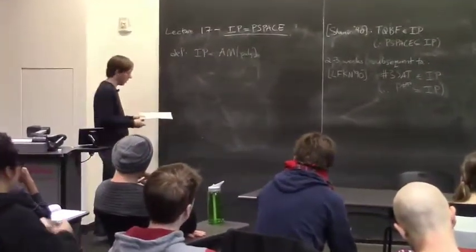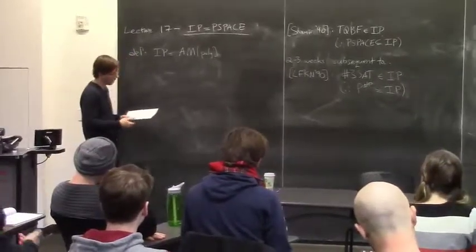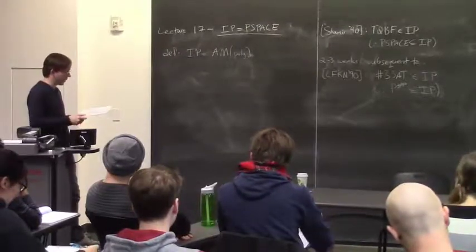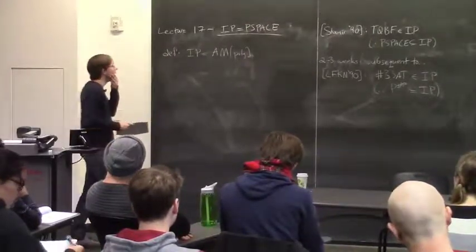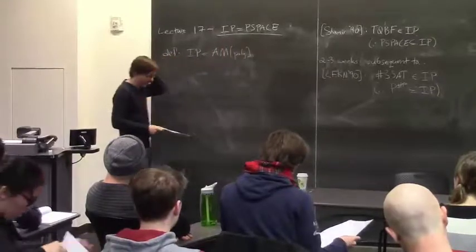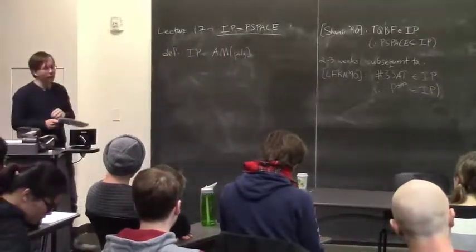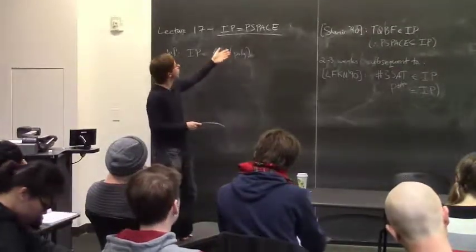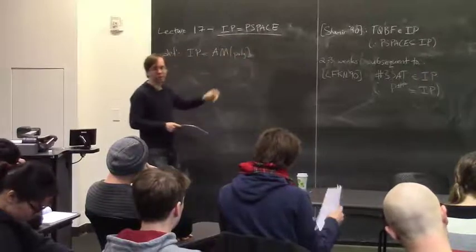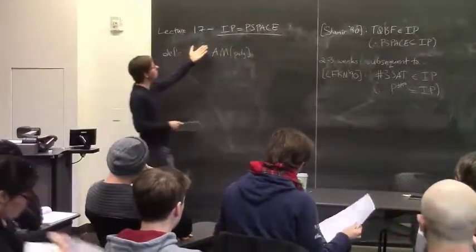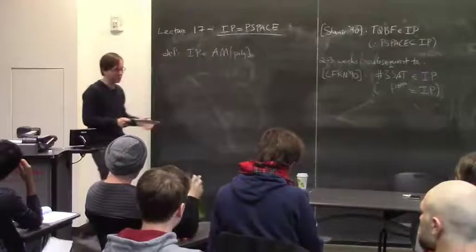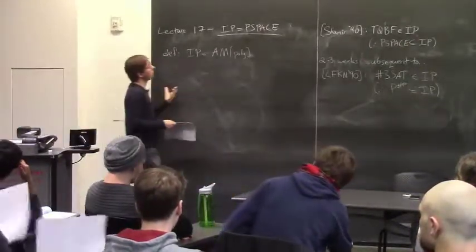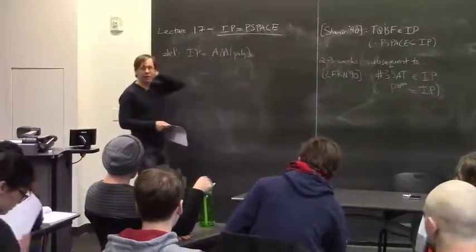In the meantime, there are also theorems called MIP equals NEXP and some other such things. It's considered a bit of a shocking theorem at the time. One reason is that it's a relationship between complexity classes that does not relativize. In fact, prior to it being proved, there were oracles showing that IP did not equal PSPACE relative to those oracles, so people generally believed this was not true—but then it turned out to be true. It also shows the amazing strength and power of both randomness and interaction in the context of proofs.